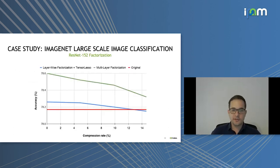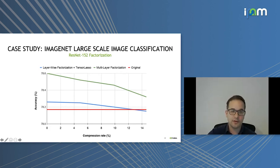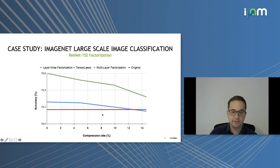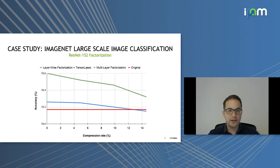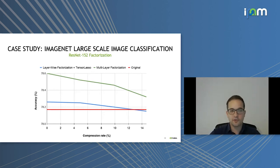On ImageNet — classifying images into 1000 classes — we trained ResNet-152 replacing convolutions with factorized convolutions. In red is the original network; in blue we applied layer-wise factorization with an L1 regularization on the rank, which we call tensor lasso; in green we compressed several layers jointly. Again we can compress the network with small increases in performance and better robustness.